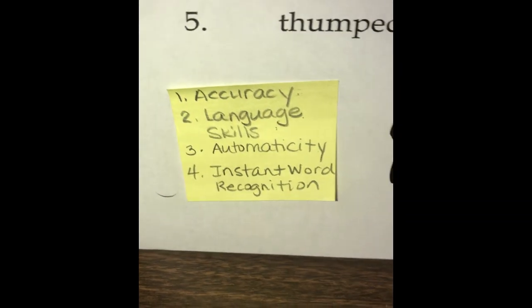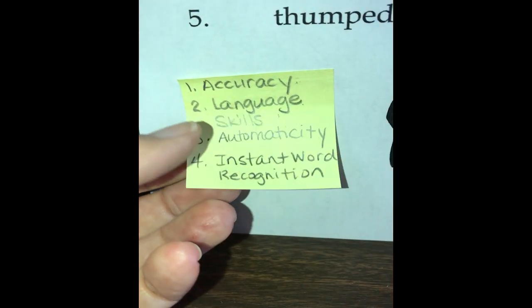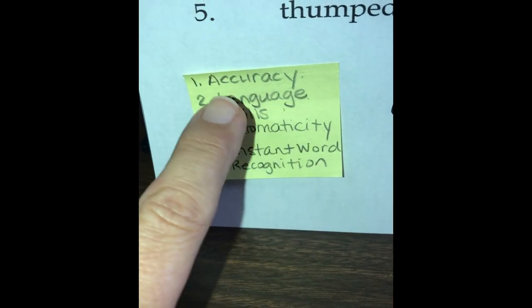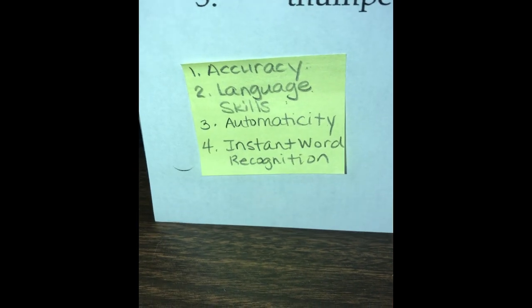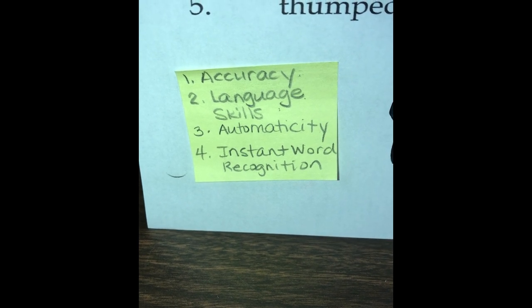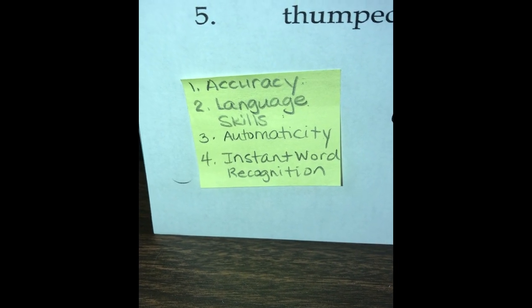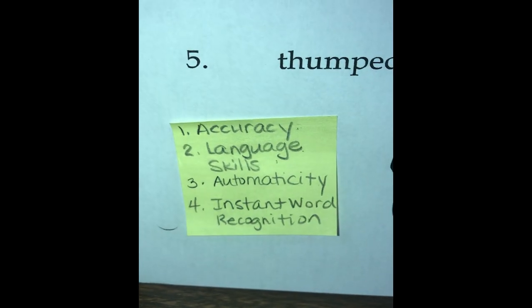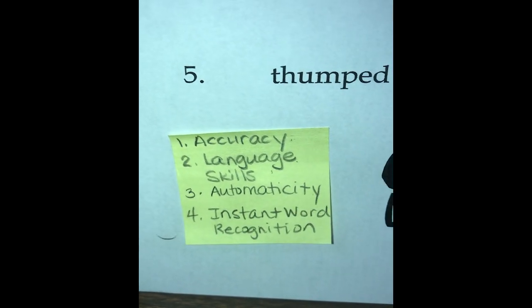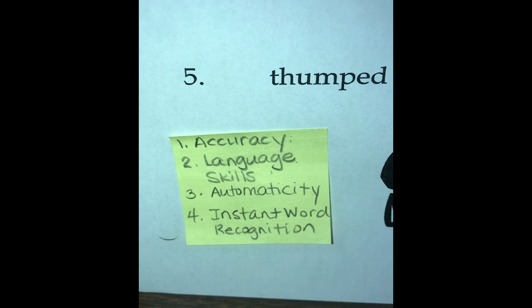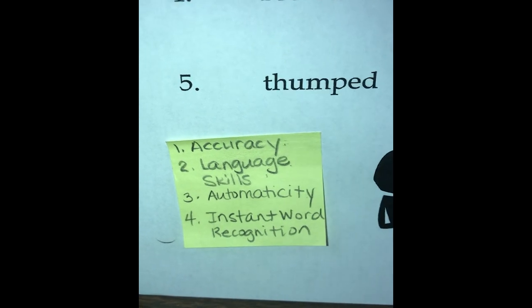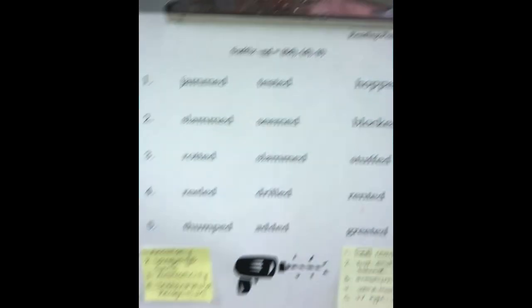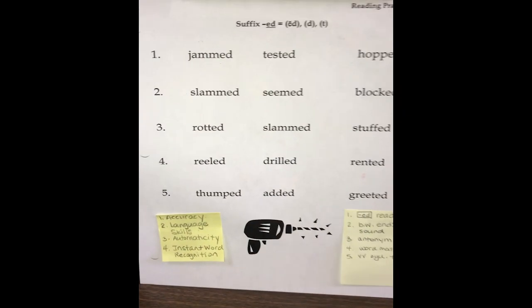You'll notice that there are four reads on the reading practice sheet. The first read is focused on accuracy. The second read is building language skills through our thoughtful preparation of questions. This is an example of the questions that I'll prepare for a word list. The third read is reading with attention to automaticity, and the last read is focused on developing instant word recognition.